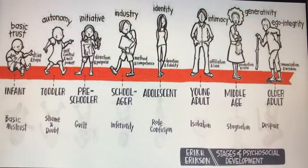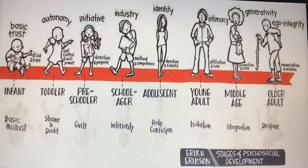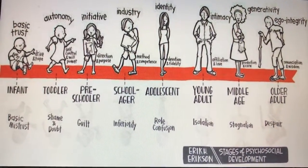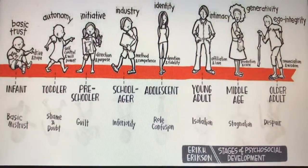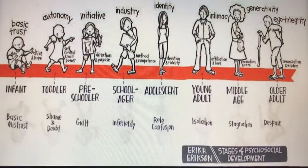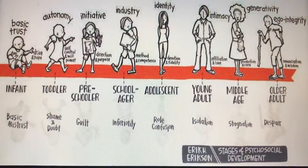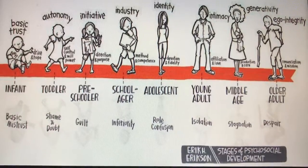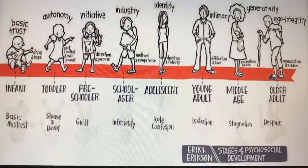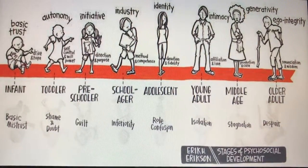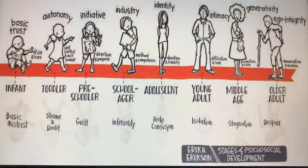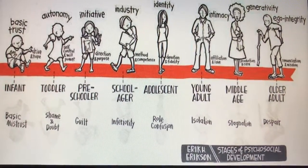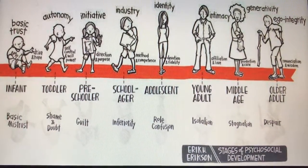Their belief is: who am I? The sixth stage is intimacy versus isolation, which is between the ages of 20 to 24 years old, considered to be young adulthood. This is where they develop the ability to give and receive love and commitment. It's an affiliation and love resolution. Their belief is: I am who I love.